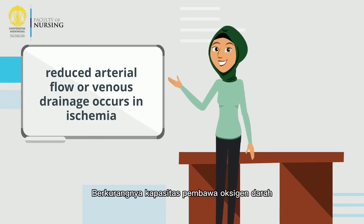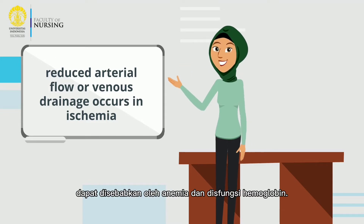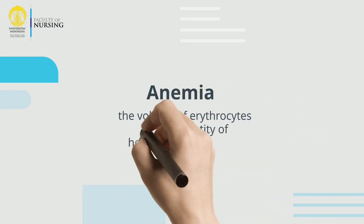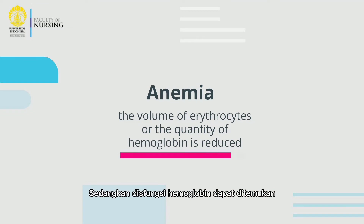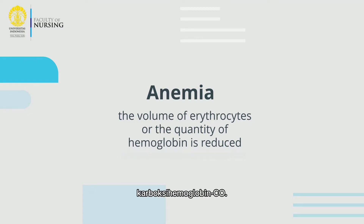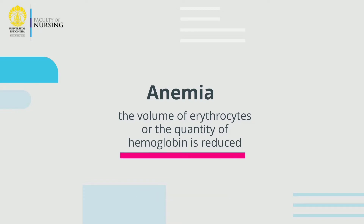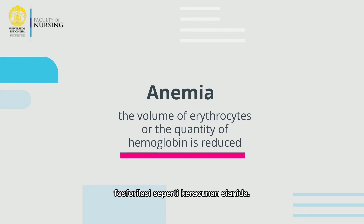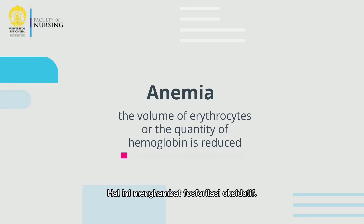Reduced oxygen carrying capacity of the blood can be caused by anemia and hemoglobin dysfunction. In anemia, the volume of erythrocytes or the quantity of hemoglobin is reduced. Meanwhile, hemoglobin dysfunction can be found in carboxyhemoglobin, such as CO poisoning. Disturbances in the respiratory or oxidative chain can be found in oxidative phosphorylation inhibition, such as cyanide poisoning, which inhibits oxidative phosphorylation.